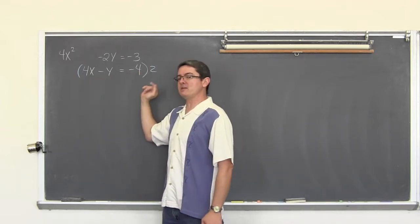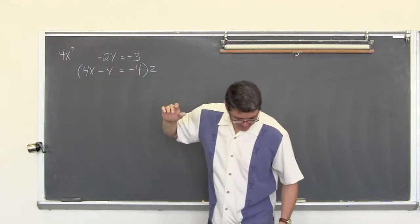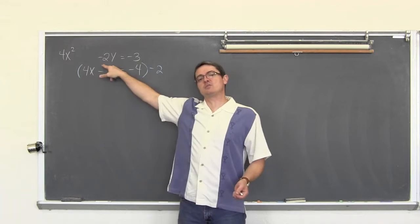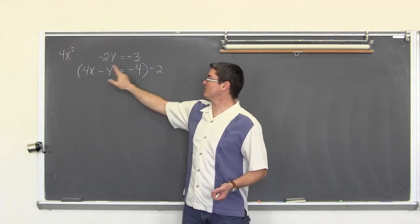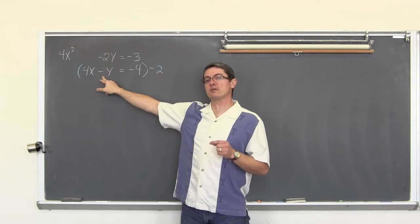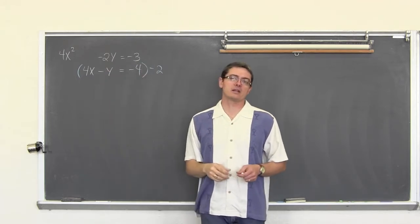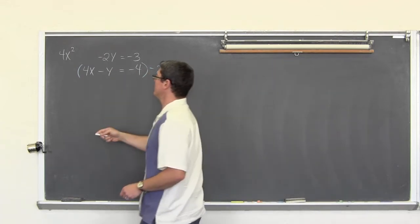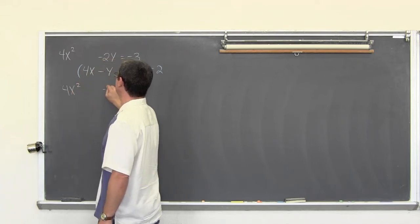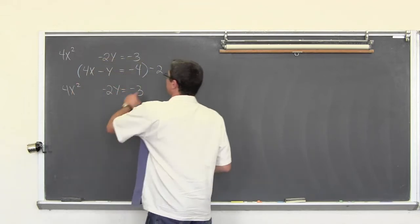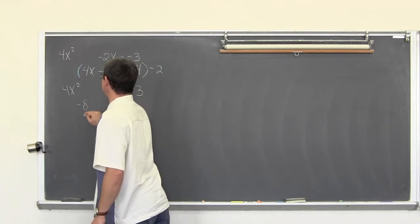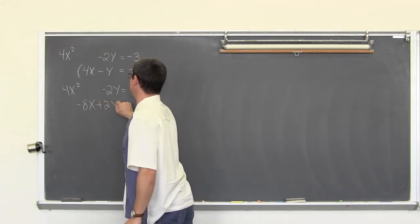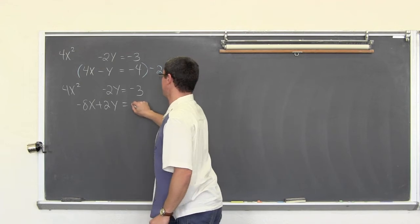You might have to manipulate both equations, or in this case just one. We are going to multiply the second equation by negative two, because I already have a negative two in front of the y, and if I multiply by negative two I can have a positive two in front of this y. When I add my two equations I will have a sum with only one variable. Putting that negative two through there: negative two times four is negative eight x; negative two times negative one y is positive two y; negative two times negative four is positive eight.